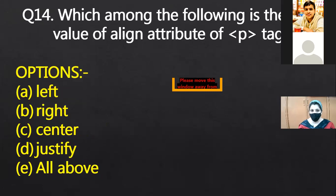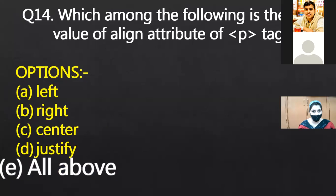Which among the following is the valid value of align attribute of P tag? All above. So you can set the alignments left, right, center or justify.